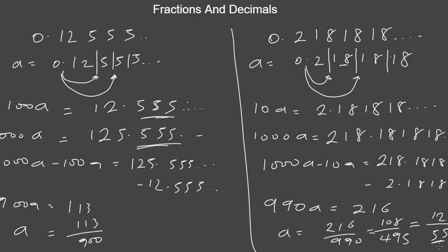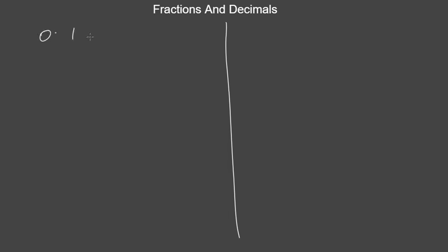We've talked about fractions and their types, and how to perform addition, subtraction, and multiplication on fractions. We've also talked about decimals, the various types of decimals, and how to convert from decimals to fractions. Now let's talk about how to add and multiply decimals. To add two decimal numbers like 0.126 plus 0.1734, add them according to their place values — thousandths with thousandths, hundredths with hundredths, tenths with tenths.